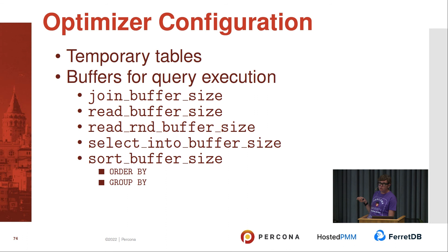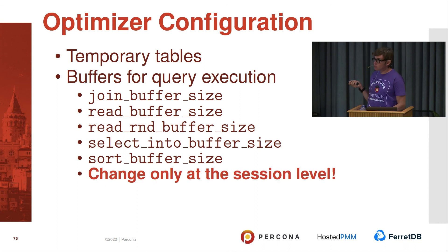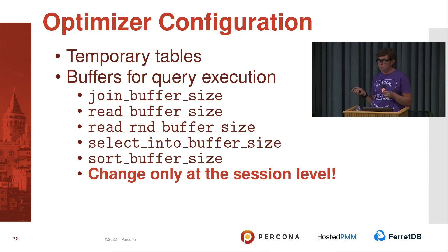mrr_buffer_size is for multi-range read optimization. select_into_buffer_size is for SELECT INTO OUTFILE or SELECT INTO DUMPFILE statements. sort_buffer_size is for ORDER BY and GROUP BY operations. Before MySQL 5.7 this was a dangerous option that could cause memory leaks, but now it's fixed and safe to increase. Change all these variables only at the session level and test first. You can use SET command, SET STATEMENT for Percona 5.7 and earlier, or since 8.0 a special hint comment inside the query.